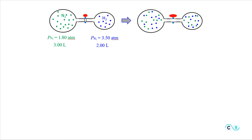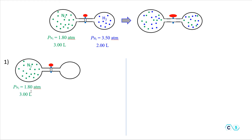So how are we going to address this problem? In order to simplify it, we're going to separate this into two parts and look at the gases separately. First, we look only at the nitrogen — we ignore the hydrogen for a moment and think about what happens when we open the valve. The nitrogen will start flowing into the second container and will now occupy a bigger volume of 5 liters — 3 liters from one container and 2 from the other.